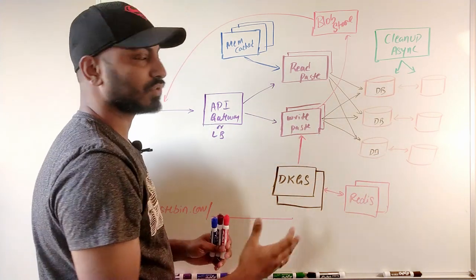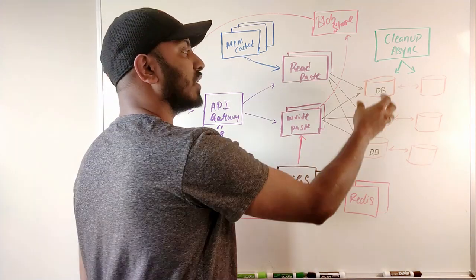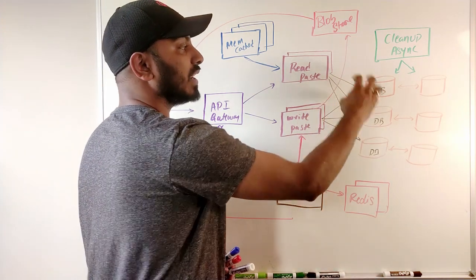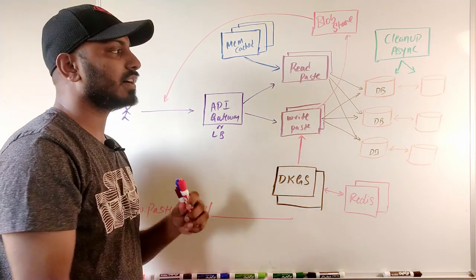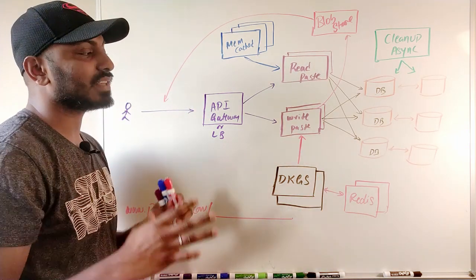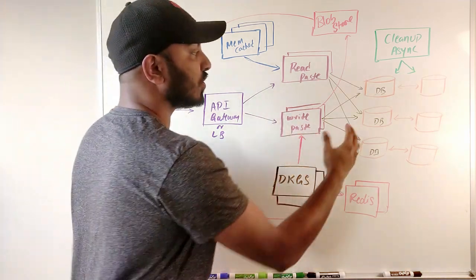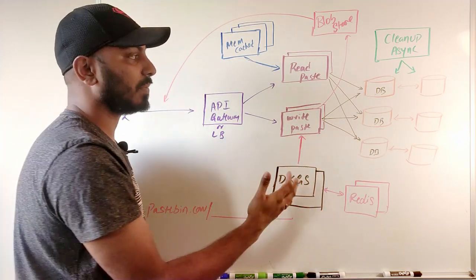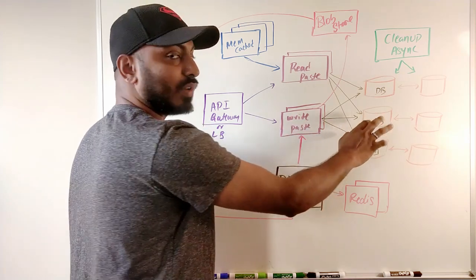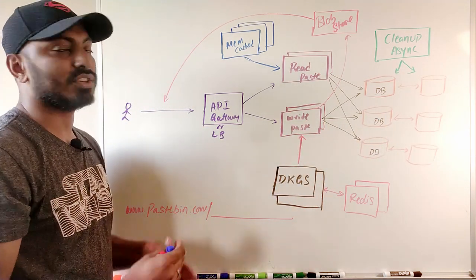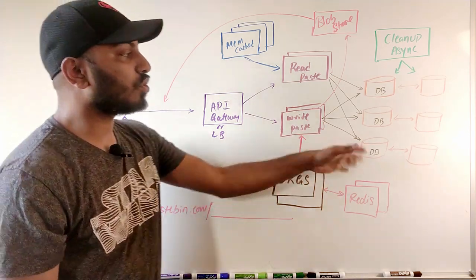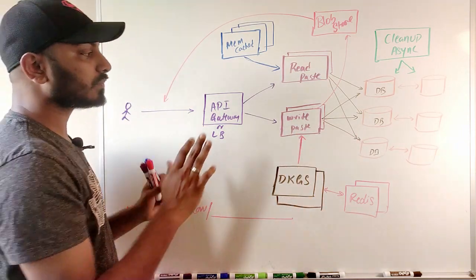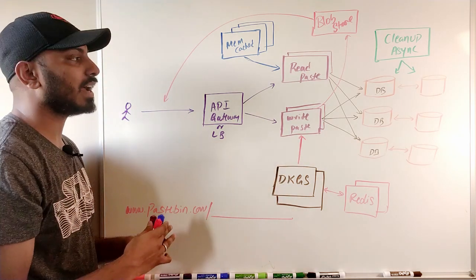The serverless functions write data into a partitioned database — partitioned by user ID using range partitioning. For example, IDs from 1 to 1 million go to one partition. Always maintain 50% extra space and provision the next partition when current fills up. Write traffic of 150–200 per second is easily handled. With NoSQL, the database is already in a ring configuration and writes are distributed automatically.